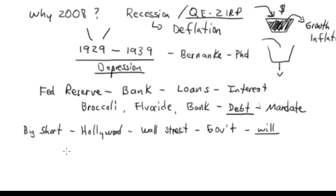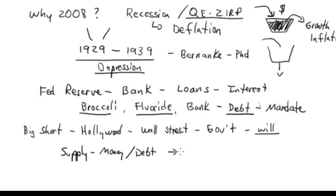Because the government, the Federal Reserve, has supply — and their supply is money, their supply is debt. Just like the broccoli farmer or the fluoride manufacturer, they are interested in guaranteeing that there is demand for their supply. And one way of creating that demand is opening up the subprime mortgage area.